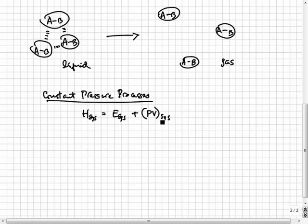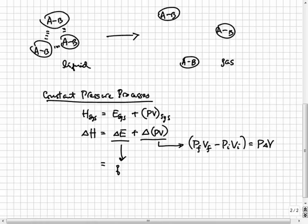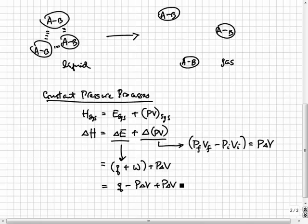So delta H equals delta E plus the change in P times V, which is P final times V final minus P initial times V initial. If the reaction happens at constant pressure, P final equals P initial and we can factor it out to get P times delta V. Putting in delta E equals Q plus W, and work equals negative P times delta V, we recognize that the work term cancels. So at constant pressure, delta H is just equal to Q. That means if we measure heat for a reaction at constant pressure, we are directly measuring the change in enthalpy.